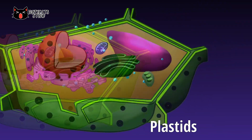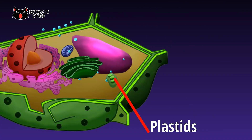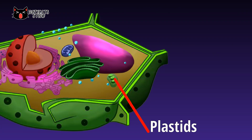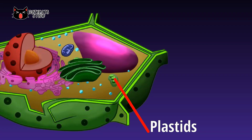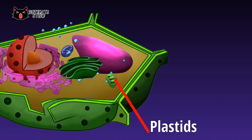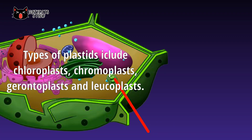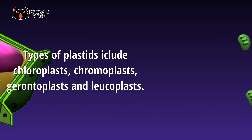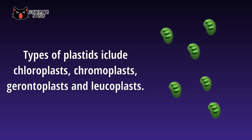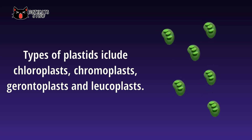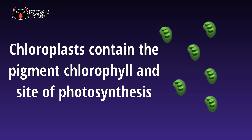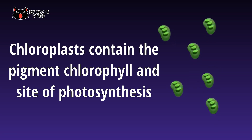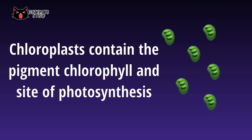Plastids are a type of organelle found in plant cells and algae. Like mitochondria, plastids are membrane-bound organelles that contain nucleoids, making them semi-autonomous organelles. There are different types of plastids, including chloroplasts, chromoplasts, gerontoplasts, and leukoplasts. Chloroplasts contain the pigment chlorophyll that captures energy from sunlight for photosynthesis — they are the site of photosynthesis, the process of making food.